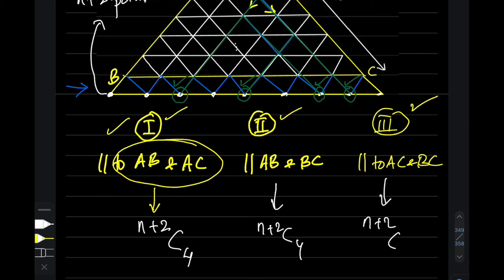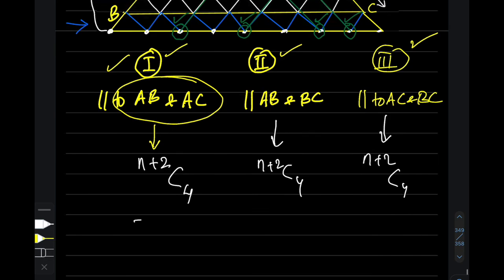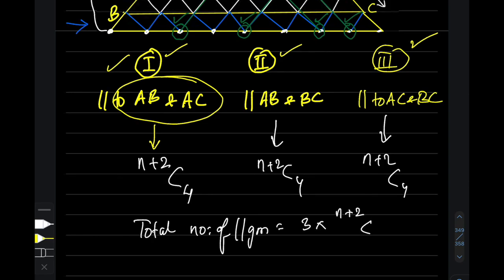By symmetry, the count for all three categories is the same — each equals C(n+2, 4). So the total number of distinct parallelograms is 3 × C(n+2, 4). This problem was slightly tricky, but with proper logic and reasoning you can easily crack it. Thank you so much for watching — be safe and be healthy.